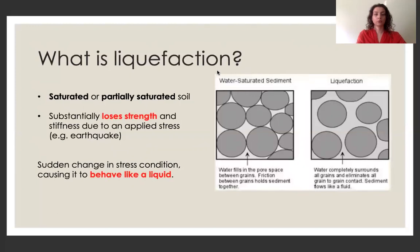So what is liquefaction then in terms of earthquakes? In general, we're talking about a partially or fully saturated soil, which substantially loses strength and stiffness because of an external stress that is applied, for example, an earthquake. And it's this sudden change in stress condition that actually causes the soil to behave like a liquid. So this diagram here nicely illustrates that the presence of water here causes the grains to lose contact with each other, which is why they can flow more like a fluid or more like a liquid.